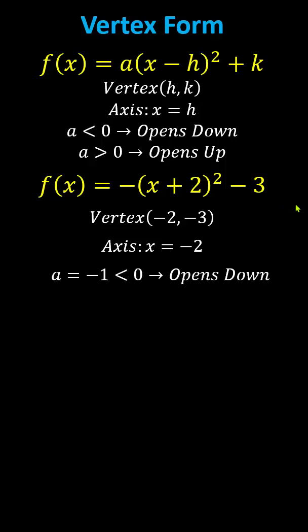To graph the function, we may want to find at least one more point to determine how wide or narrow the parabola is. For example, f of zero equals negative seven, giving us the y-intercept of zero comma negative seven.